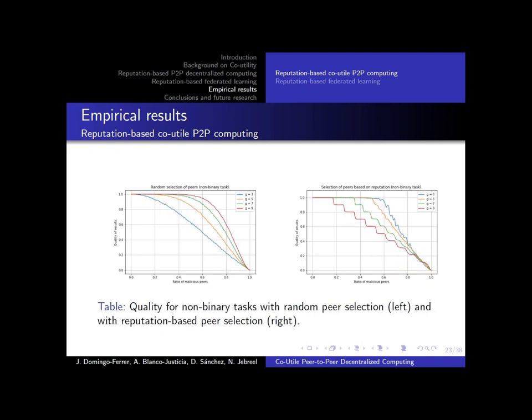For non-binary tasks, similar behavior appears: having a redundancy of 9 when we do not have reputations available gives us the best results, but once we have reputations available, g equals 3, a redundancy of 3, gives us the best result. So the reputation system allows us to decrease the redundancy of the verifiable computing.